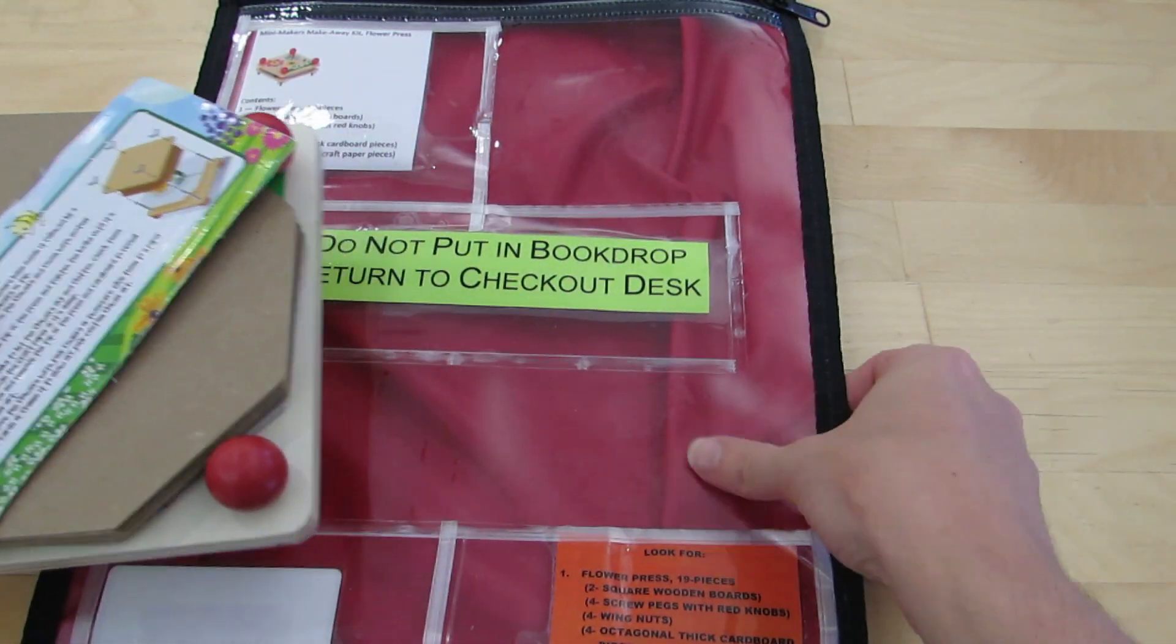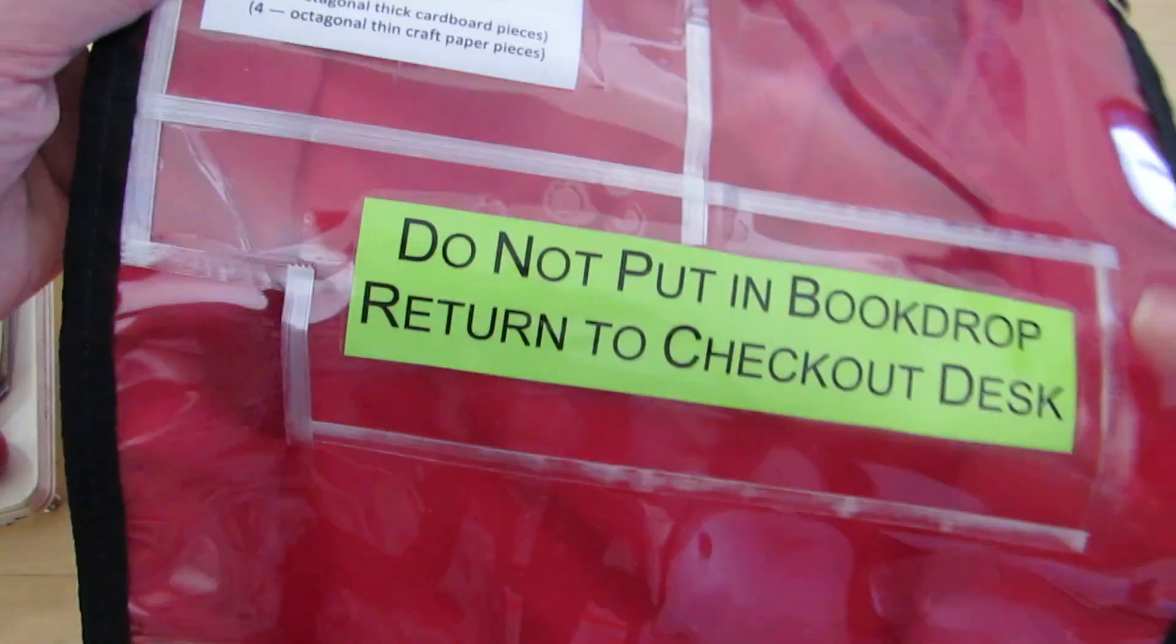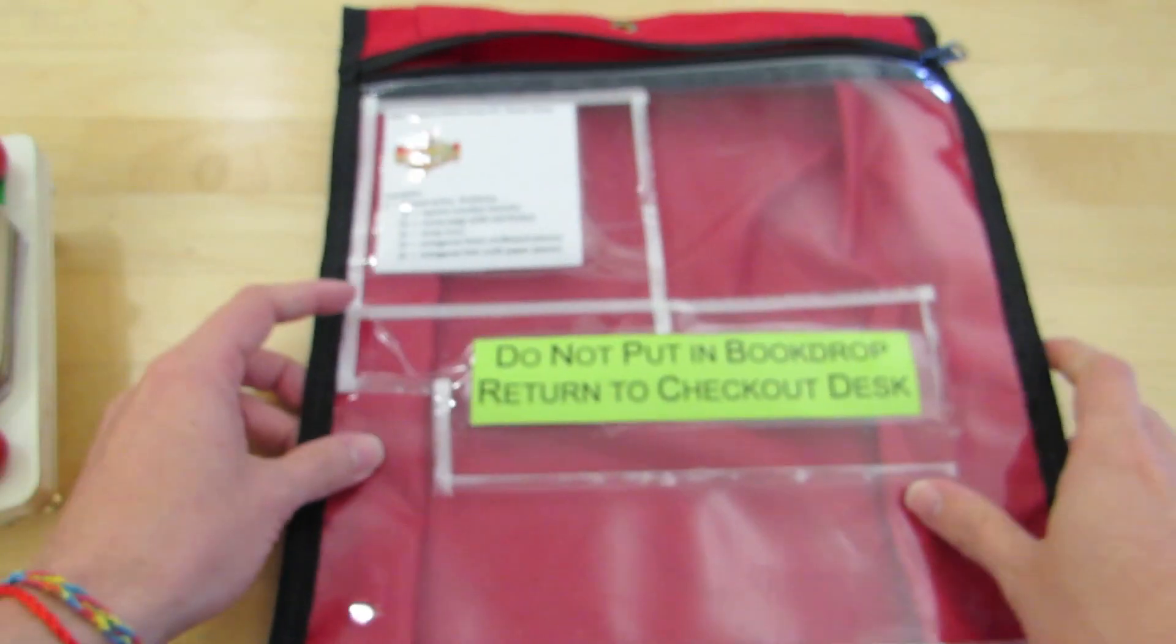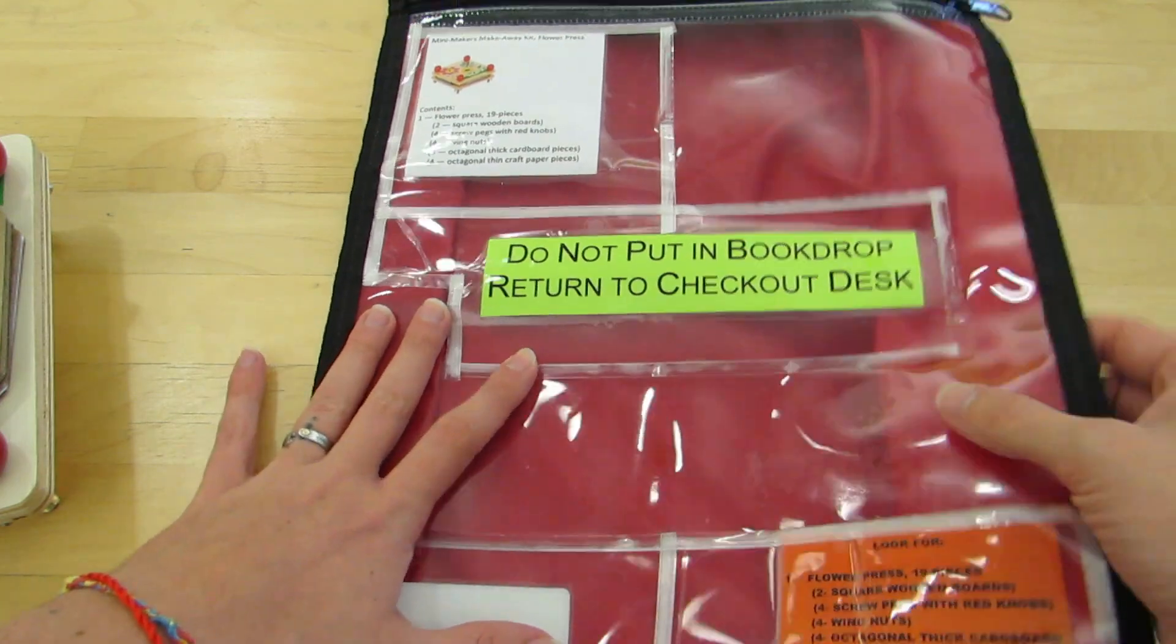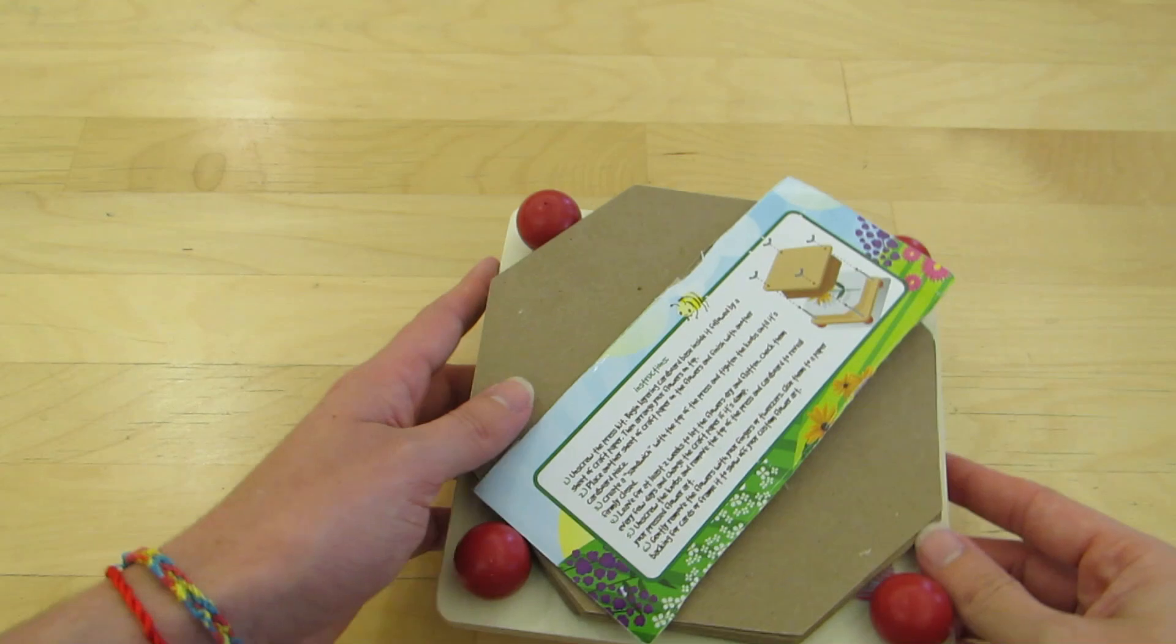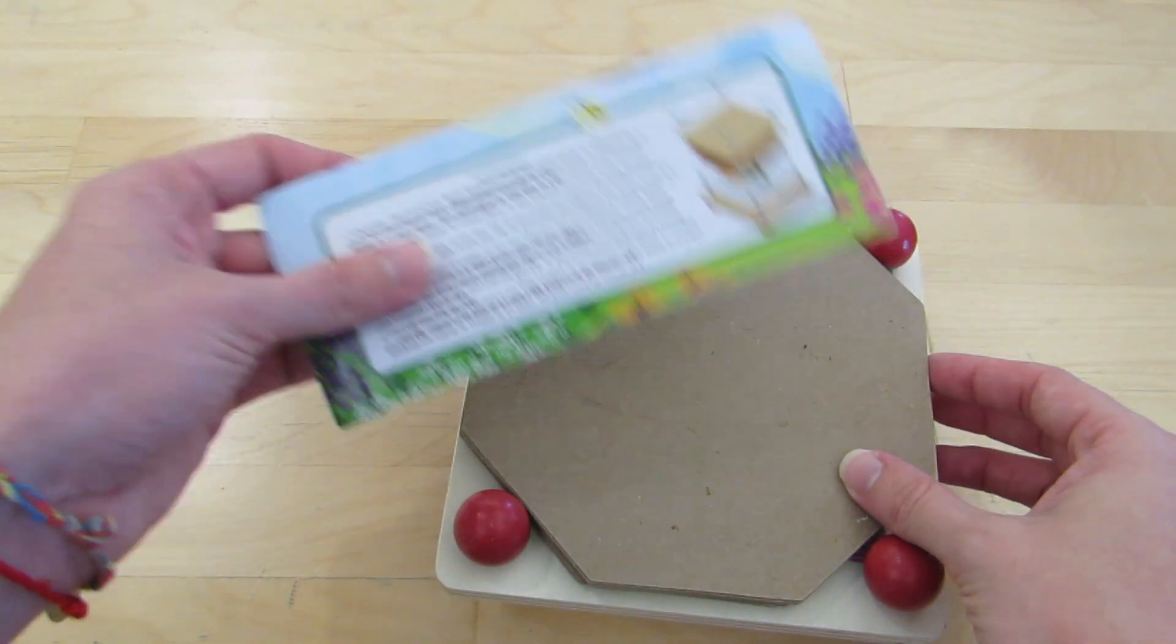Hi everyone, welcome back. This week we're going to be talking about mini makers kits. We're going to start out with this mini makers flower press. You'll notice that it comes in a red bag. A lot of the mini makers kits do, but not all of them, but it's a good thing to look for. So this week we're going to be talking about the flower press.